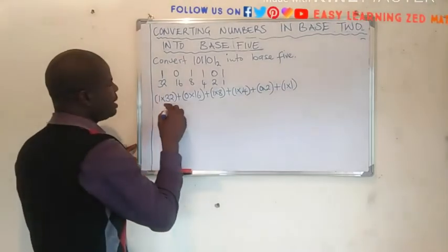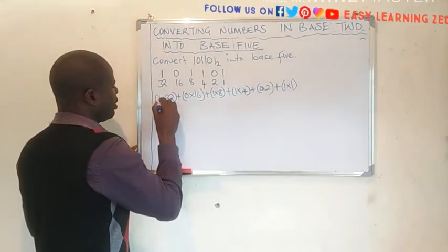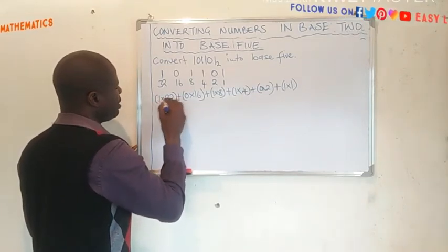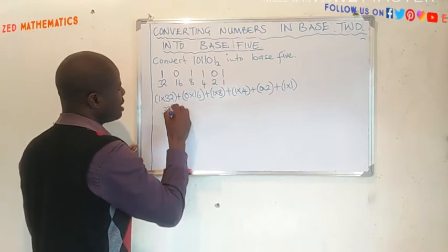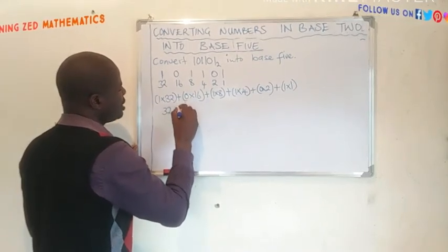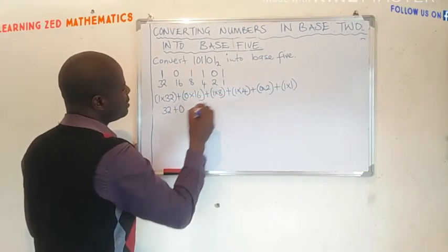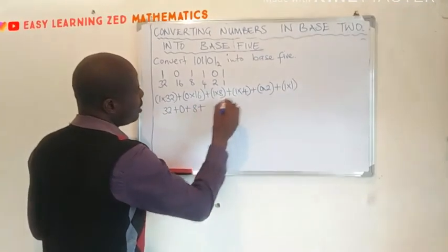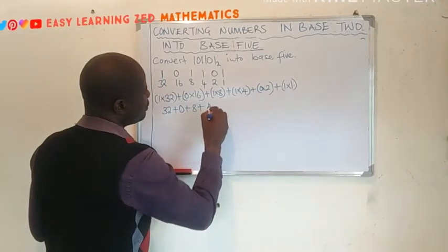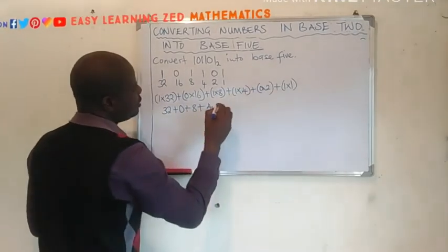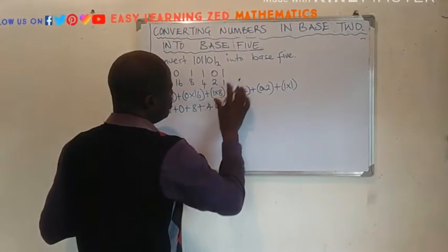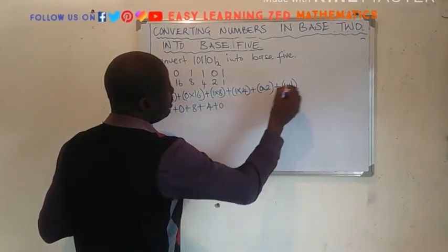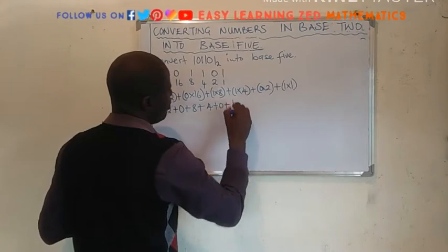Now, let's find the products. This one will give us 32, 1 by 32, that is 32, plus 0 by 16, that will be 0, plus 1 by 8 will give us 8, plus 1 by 4 will give us 4, plus 0 by 2 will give us 0, then 1 by 1 will give us 1.